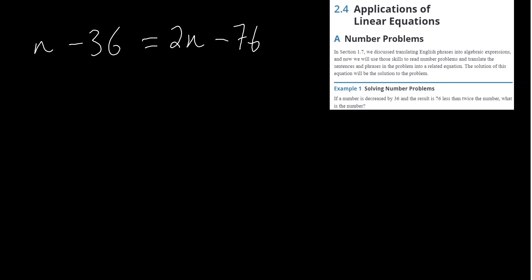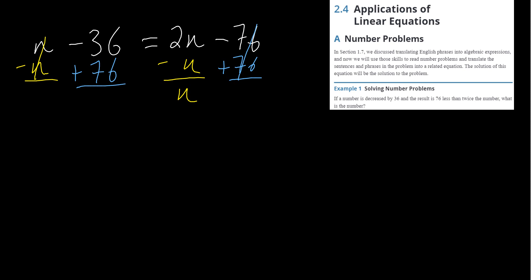Let's solve this. We're going to do two things simultaneously: subtract n from both sides, and then add 76 to both sides. We end up with simply n on the left, and that gives us n equals 40. The n is equal to 40.